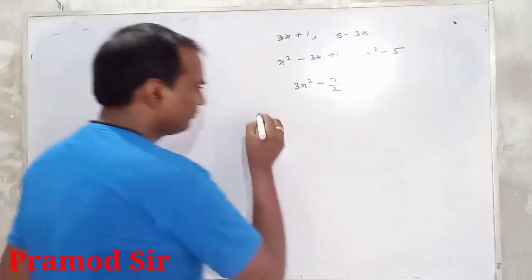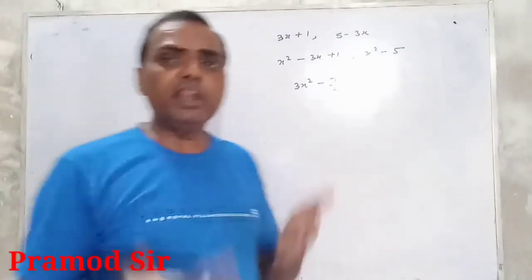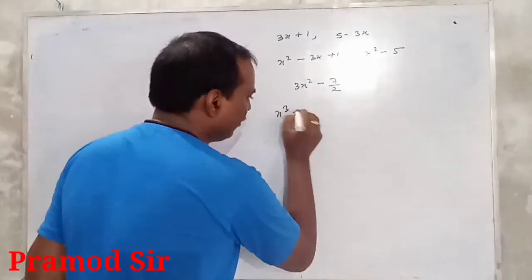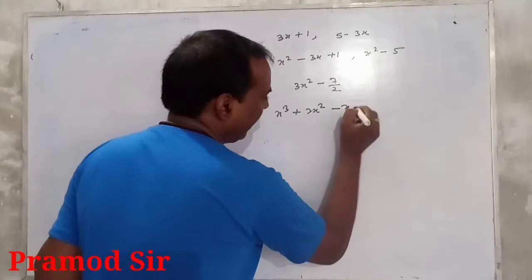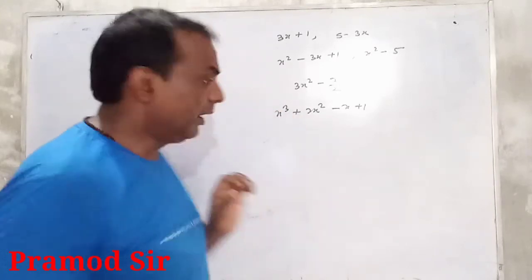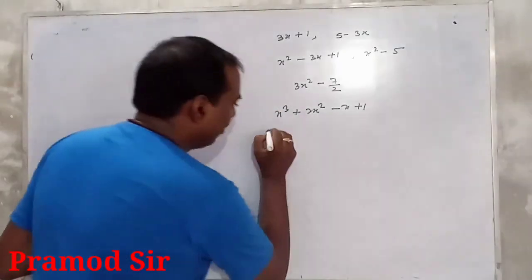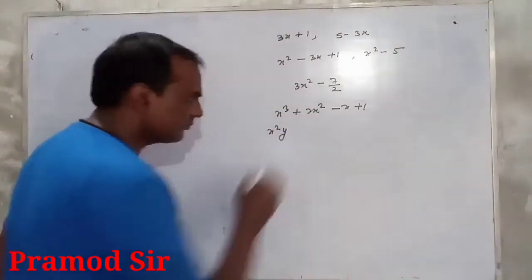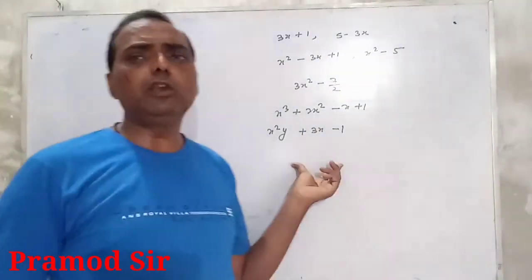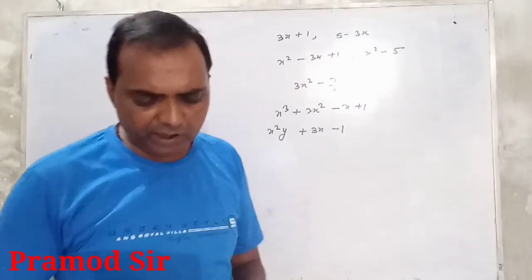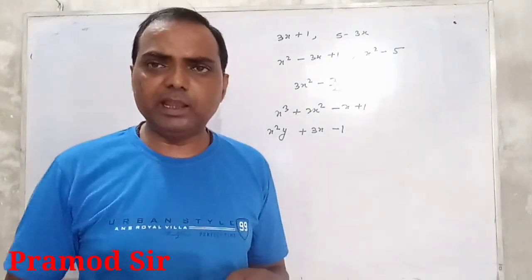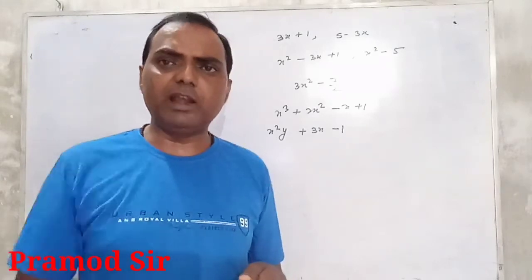If degree is 3, we call it a cubic polynomial, for example x³ + 2x² − x + 1, jiska maximum degree 3 hai. And if degree is 4, we call it a biquadratic polynomial.